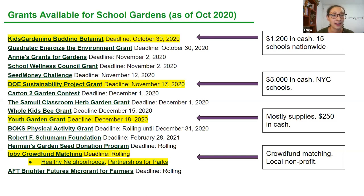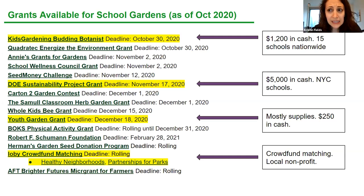The next one highlighted is the DOE Sustainability Project Grant, and Thad from the DOE will be here to answer specific questions about it. This one is probably a lot more worth your while. The top prize is $5,000 and the applicants are any New York City public schools — I believe charter schools are not included, but that's a great question for Thad.